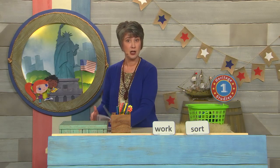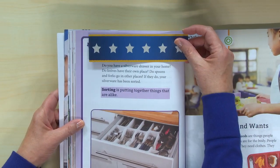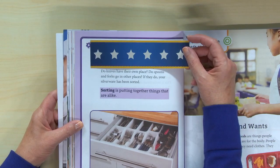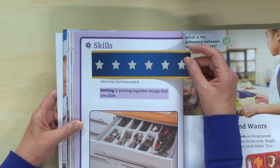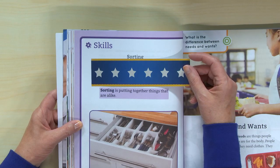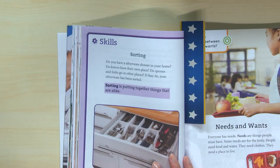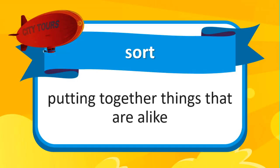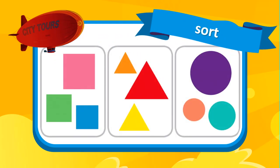What we were doing was sorting those socks, and that's the skill we're going to work on — sorting. It says: 'Do you have a silverware drawer? Do knives have their own place? Do spoons and forks go in other places? If so, your silverware has been sorted.' Sorting is putting together things that are alike. That is our vocabulary word: sort — putting together things that are alike.